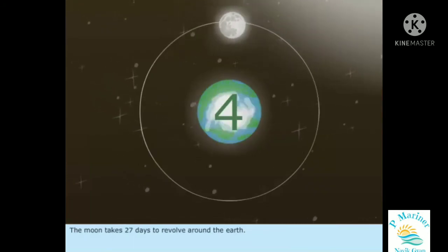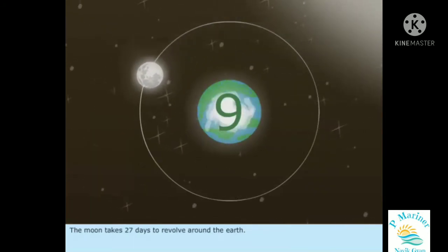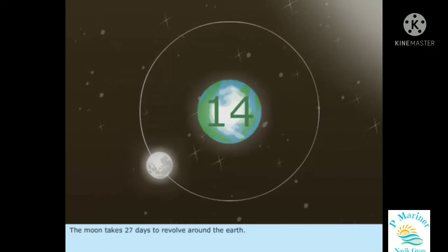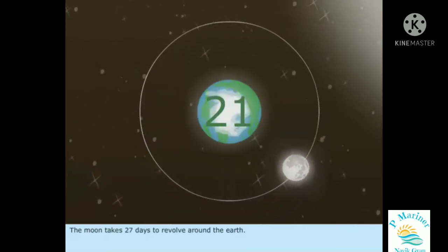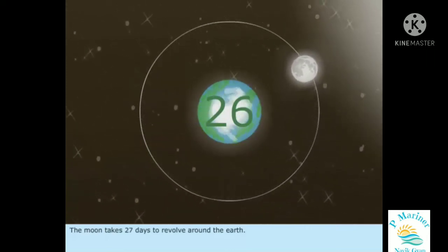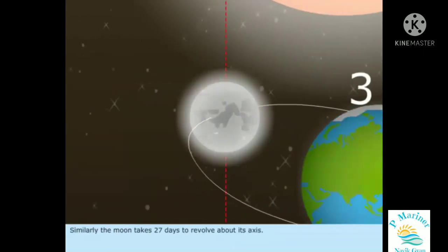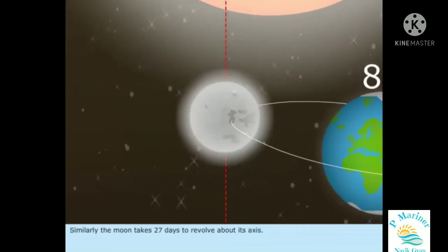The Moon takes 27 days to revolve around the Earth. Similarly, the Moon takes 27 days to rotate on its axis.